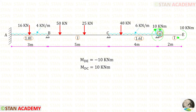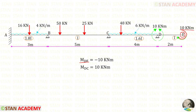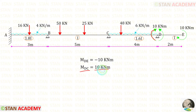At point D we can easily find the final moments because on the right side we have the overhanging. At point E we have a concentrated moment of 10 kNm acting in the clockwise direction. So MDE should be acting in the clockwise direction — it will be negative — and MDC should be acting in the clockwise direction and should be positive. The values of MDE and MDC should be equal to 10.